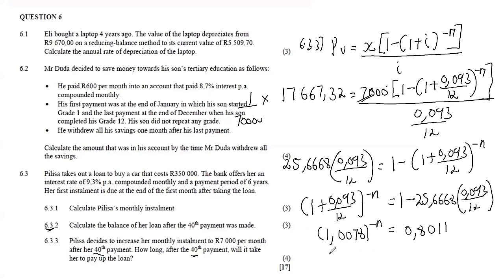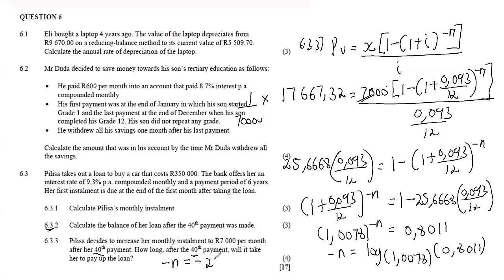Applying logarithms: negative n times log(1.0078) equals log(0.8011). So negative n equals log(0.8011) divided by log(1.0078), giving approximately negative 28.54. Dividing both sides by negative 1, n equals positive 28.54. The 28 represents the full payments of R7 000 that will be made, and the remaining 0.54 means there is still a partial payment in the next month, which also counts.